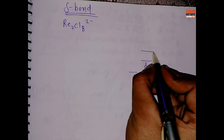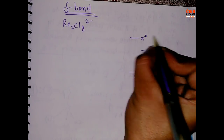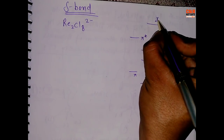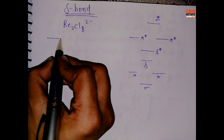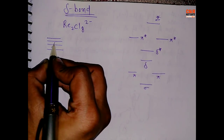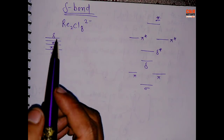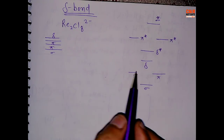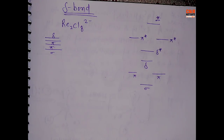For the anti-bonding part, just take the reciprocal: this becomes delta*, then pi*, pi*, and sigma*. This is because the delta bond comes into the picture when you have four bonds — sigma, pi, pi, and delta. Same goes for the anti-bonding part: sigma, pi, two pi, and delta.